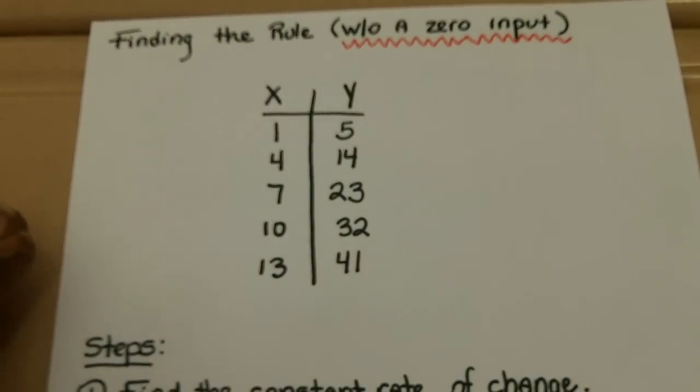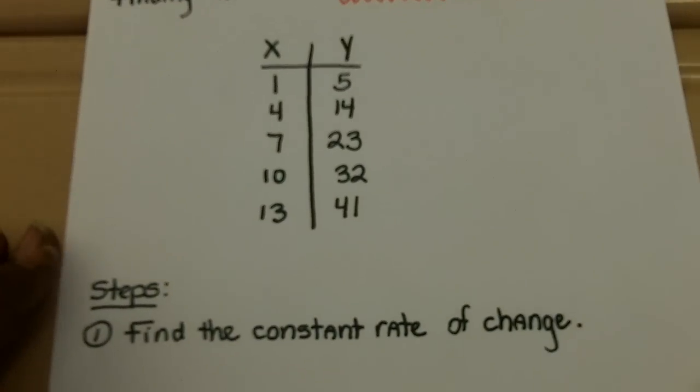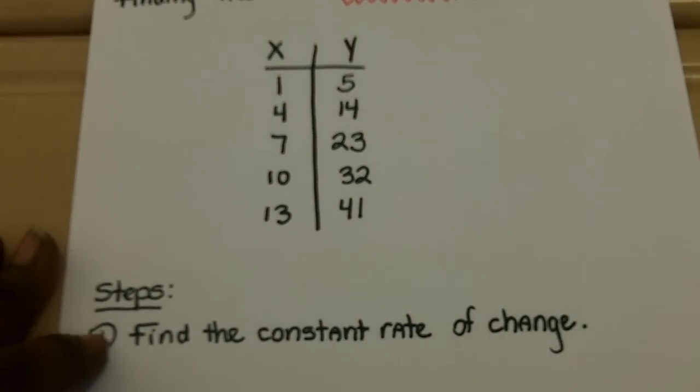Now, what if they ask you to find a rule and there is no 0 for the input? Well, pretty much it's the same process. Step 1 is, in fact, the same. You're going to start by finding the constant rate of change.